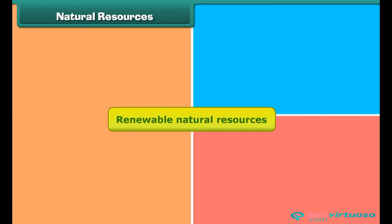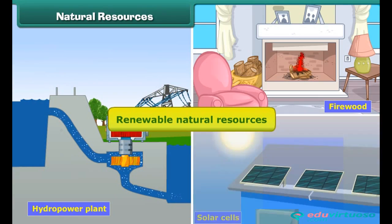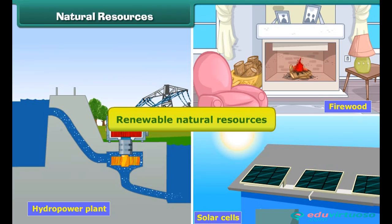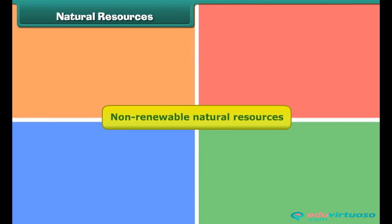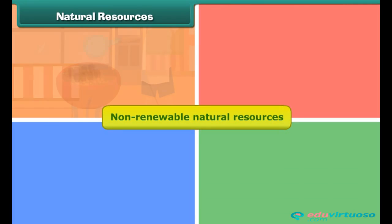Renewable natural resources are those resources that are not exhausted by human use. They are reformed and are available for continuous human use. For example, sunlight, water, trees, etc. are renewable natural resources.